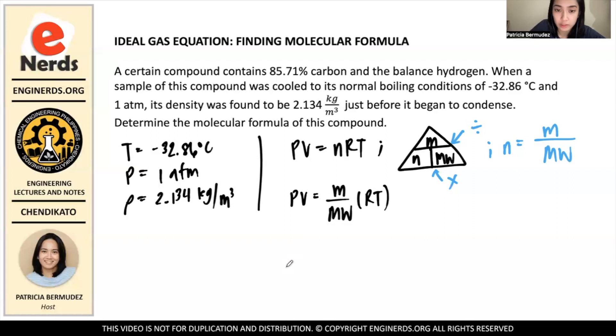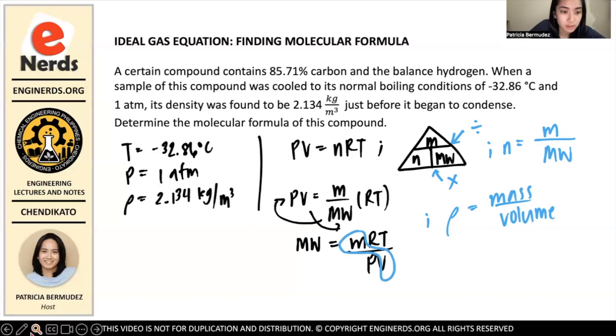And since our goal is to find the molecular weight, we're going to make this the subject of the equation. So the molecular weight = mRT/PV. And we know that density = mass/volume. So we can use this here to substitute for density. So we have molecular weight = ρRT/P. So this is the formula that we're going to use to find the molar weight of the compound.